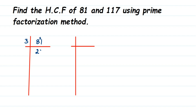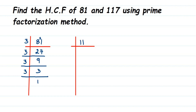3 twos are 6, remainder 2 — write this along with 1, making 21. Three 7s are 21. 27 — 3 goes into 27 three times. Then 3 threes are 9, and 3 ones are 3. This is how I do it; if you have your own method, go for it.